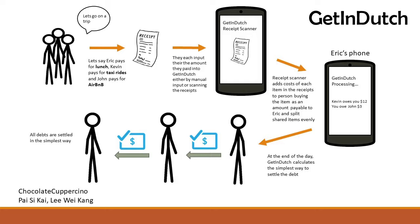How this will work is that each member of the group will input the expenditures for the entire group into the app. The app will then calculate the amount that each member owes or is owed and simplify the amount that each member has to pay at the end of the trip. It will also account for cases where not everyone in a group has to pay for a certain item or when each individual has a different expenditure.